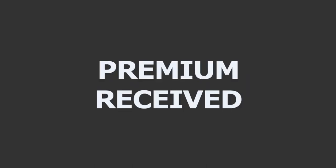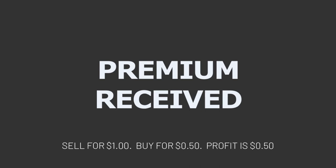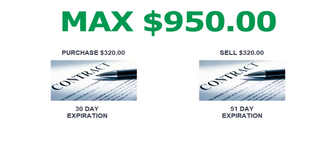That $950 is what you receive. The maximum profit potential depends on factors like time until expiration, interest rates, and implied volatility. However, in general, the maximum profit potential for this strategy is limited. Your max profit is always equal to the premium that you received when you sold the option minus the premium that you paid when you bought. For example, if you sell an option for $1.00 and buy an option for $0.50, your maximum profit is $0.50. So in our example, the max profit we can make is $950 minus commissions.